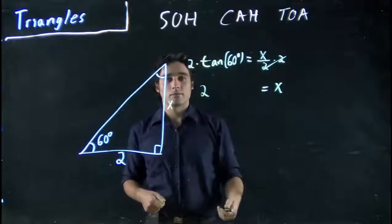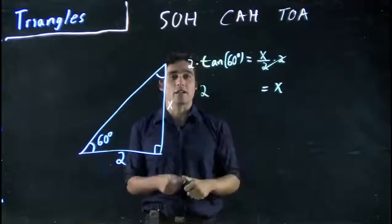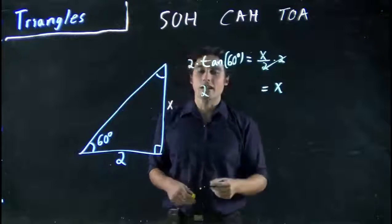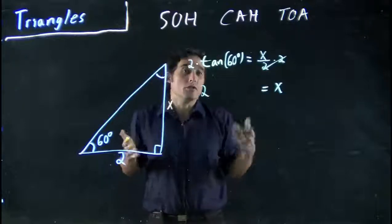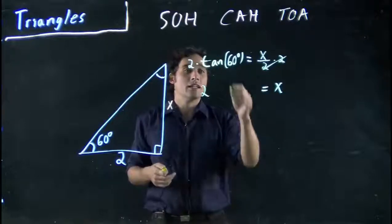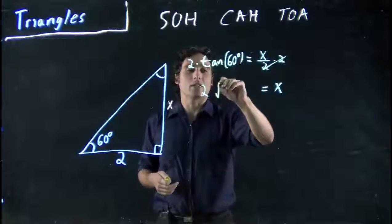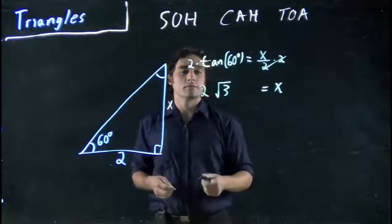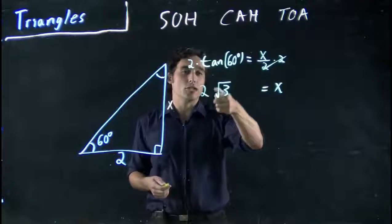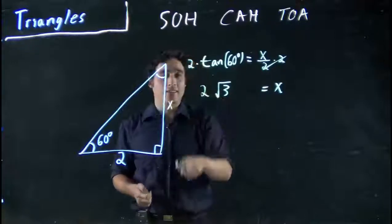Tan of 60. Well, I'd have to go to my calculator. I'd punch that into my calculator, and I purposely chose numbers that I knew would work out to something I know. Tan of 60 is actually going to be the square root of 3. So, I know X is equal to 2 times the square root of 3. That's this length here.